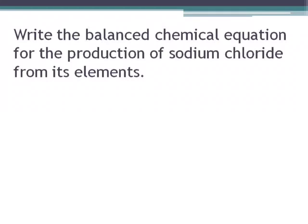Write the balanced chemical equation for the production of sodium chloride from its elements. First we have to know that sodium chloride is the combination of the sodium ion, which has a charge of 1 plus, and the chloride ion, which has a charge of 1 minus. So when you do that crisscross, you get the formula NaCl.